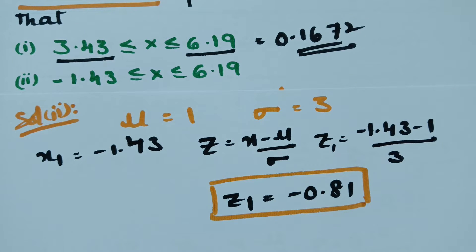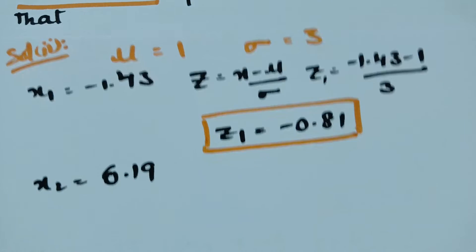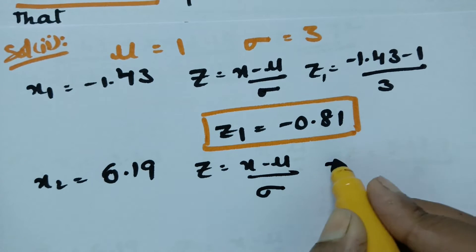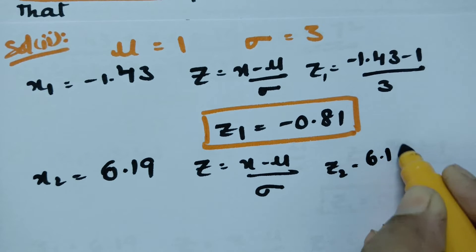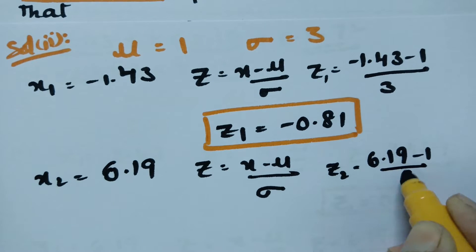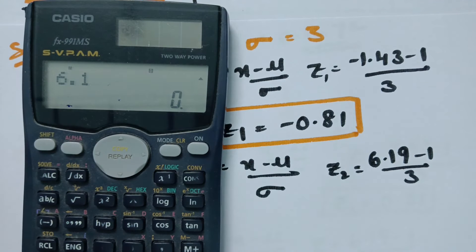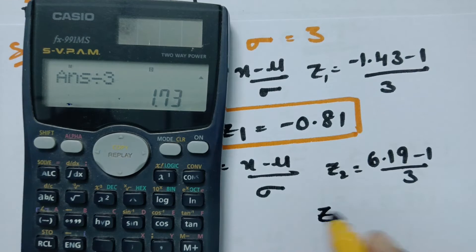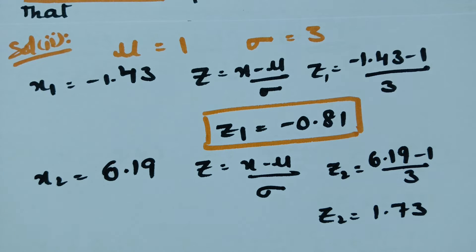For x2 = 6.19, using the same formula z = (x − mu) / sigma: z2 = (6.19 − 1) / 3 = 1.73. So z2 = 1.73. Now we have both z1 = −0.81 and z2 = 1.73 ready.